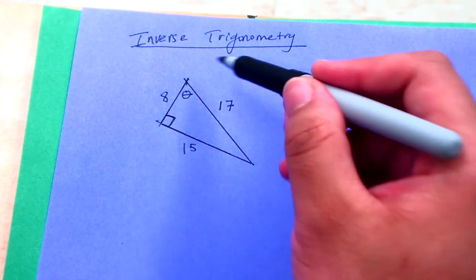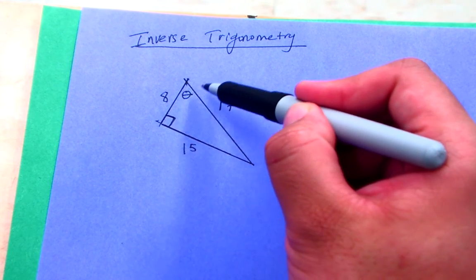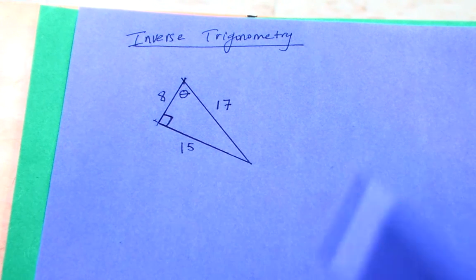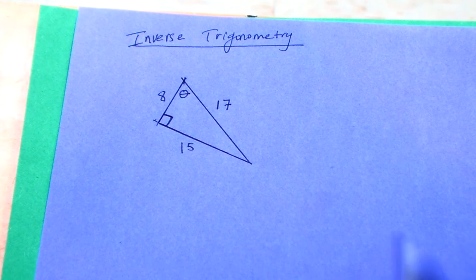So the unspoken question here, but the one that would be asked, is find the missing indicated angle of this right triangle. And really frankly we can find the other angle as well once we have one of them. So let's go ahead and see what we have here.